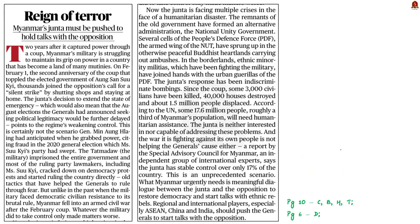This news article talks about the military coup in Myanmar. The military, which captured power through a coup, is now struggling to maintain grip. A report by the Special Advisory Council for Myanmar, an independent group of international experts, says the military has stable control over only 17% of the country. The military has been resorting to indiscriminate bombing, and according to the United Nations, 17.6 million people — roughly a third of Myanmar's population — will need humanitarian assistance. The author suggests meaningful dialogue between the junta and the opposition to restore democracy.